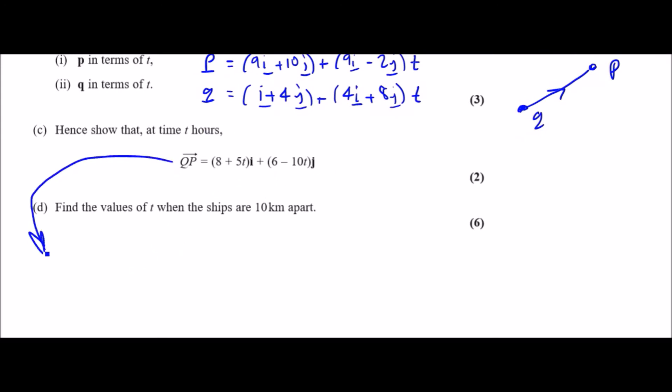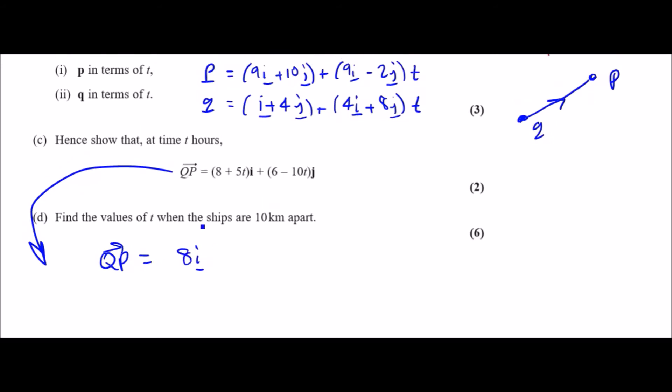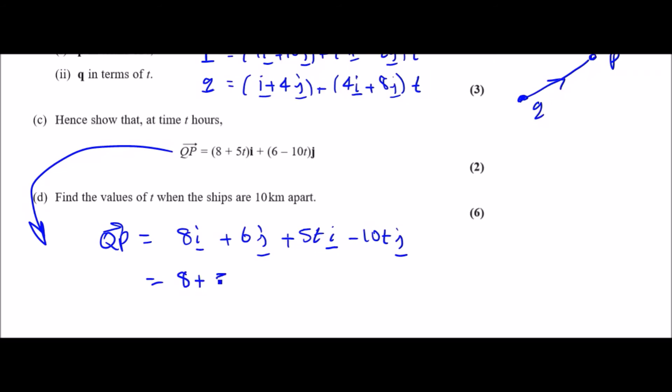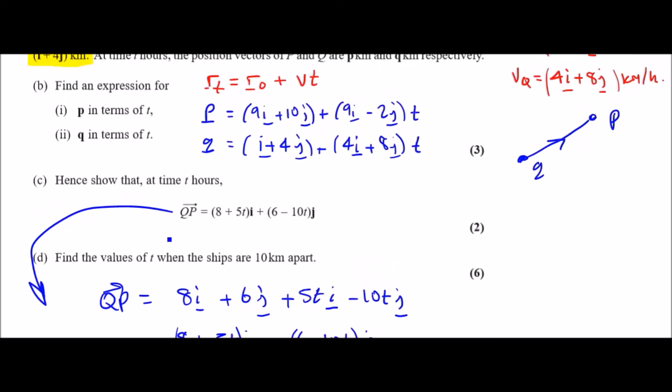We've got 9i minus i, which gives us 8i. 10 take away 4 is 6, so plus 6j. In terms of t, 9i take away 4i is 5it, so plus 5ti. Minus 2 take away 8 gives us minus 10tj. To make it this format, they just factorize in terms of i's and j's. In terms of i's, you've got 8i and 5ti, which combine to get (8 + 5t)i. Then 6j take away 10tj factorizes to (6 - 10t)j. When you can prove this, you can feel confident you've got b and c both right.